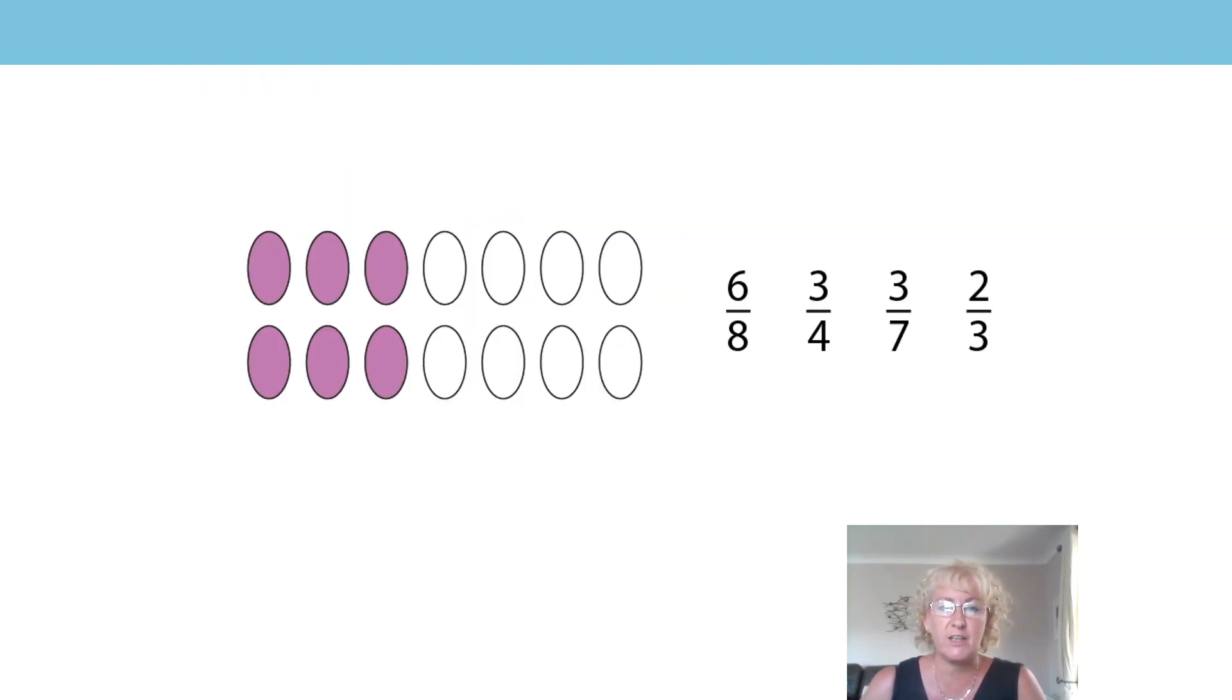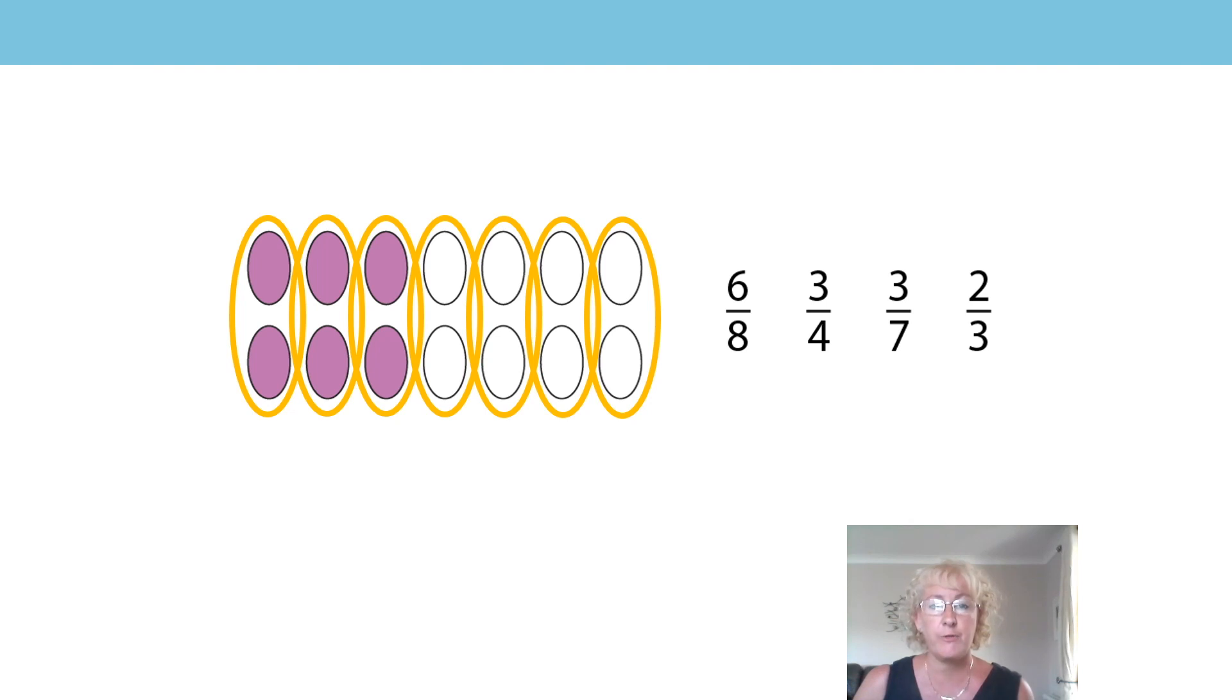Let's look at our second question now. How many equal parts can you see? Well, we can see 14 equal parts, but there are also 7 equal parts. And 3 of them are shaded, so that means we have 3 sevenths of the whole.